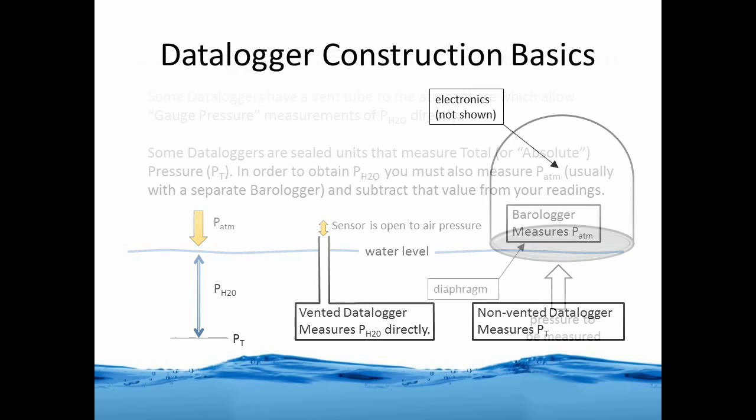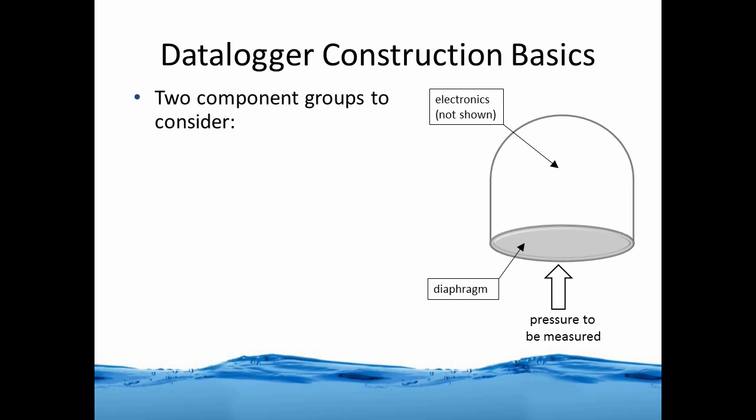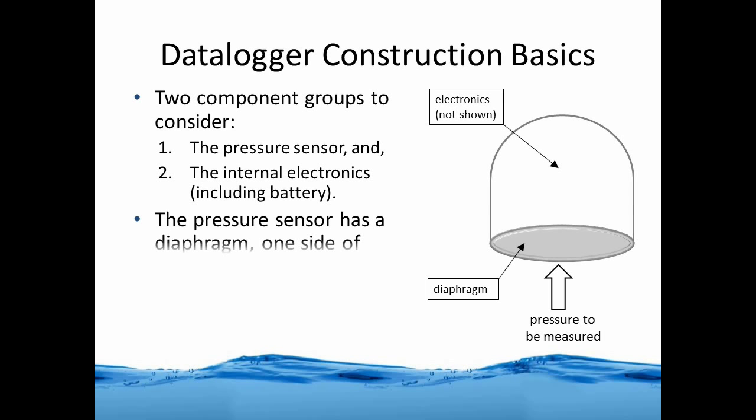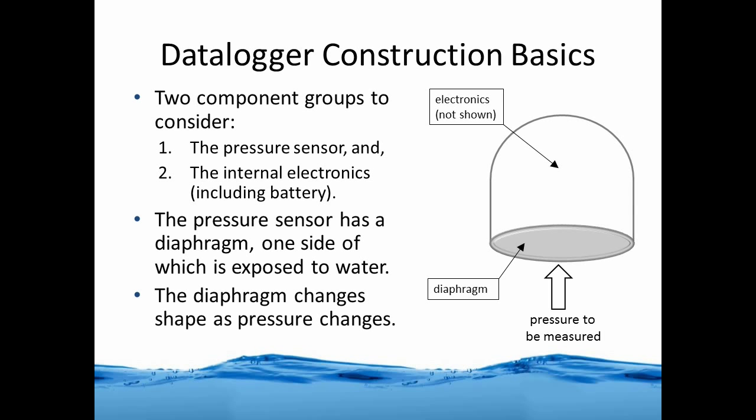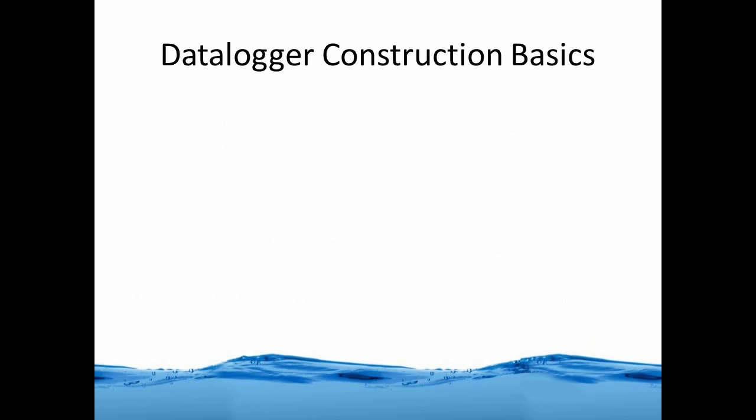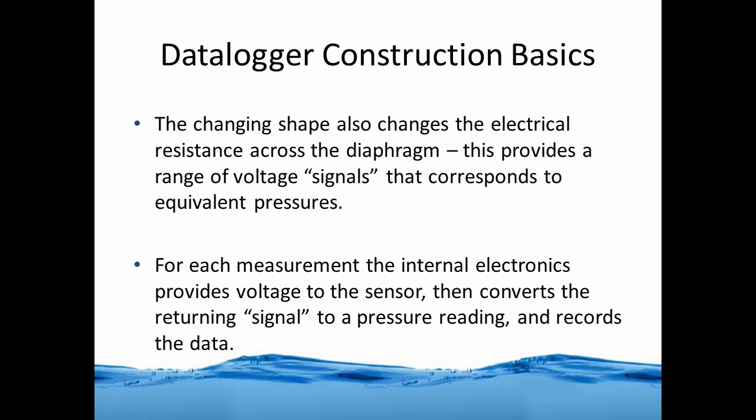Let's look at some data logger construction basics. Data loggers essentially have two components: first, the pressure sensor, and secondly, the internal electronics that include a battery. The pressure sensor has a diaphragm; one side is exposed to the water, and the diaphragm changes its shape as the pressure changes against it. The changing shape also changes the electrical resistance across the diaphragm — some refer to this as a bridge circuit. This provides a range of voltage signals that correspond to equivalent pressure readings. For each measurement, the internal electronics provides voltage to the sensor, then converts the returning signal to a pressure reading and records the data.